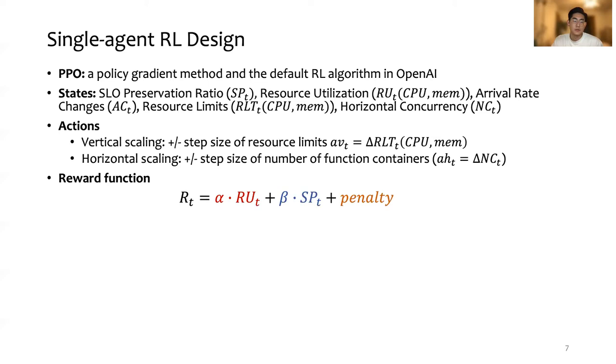The reward function consists of three parts. The first sub-expression represents the resource utilization goal, the higher the better. The second part represents the SLO preservation, which is the ratio of SLO latency divided by the actual latency, and the minimum is 1. The higher the latency, the lower this ratio is, and if there is no violation, this ratio would be 1.